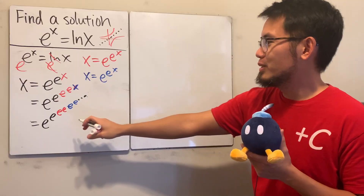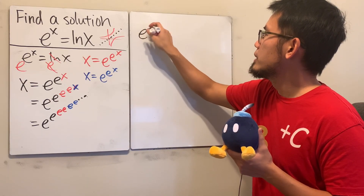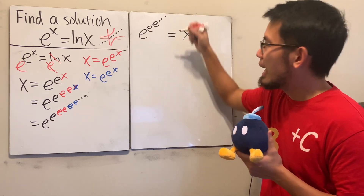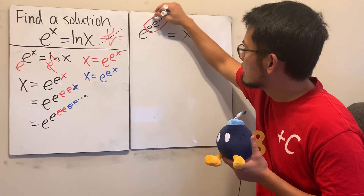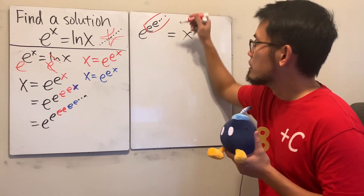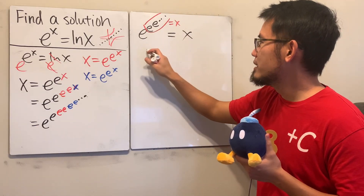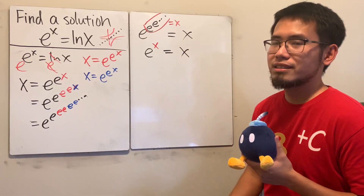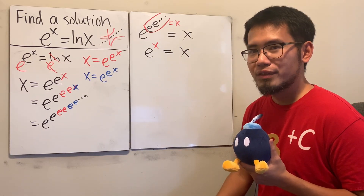We are doing complex mathematics, so we can go to the complex world. What's e to the e to the e dot dot dot? Well, e to the e to the e infinitely many times equals x. If you pay attention to just part of the tower, that portion is still e to the e to the e infinitely many times, so it's still equal to x. In other words, we can look at this as e to the x equals x.